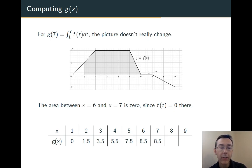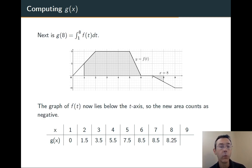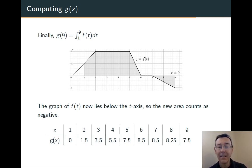When we do g(8), going from 7 to 8, now we're adding in some area below the horizontal axis. So it's actually going to have a negative contribution. We have a triangle of width 1 and height 1.5. So overall, the area is going to be 0.75. Here it's negative, so we subtract 0.75. Finally, going from 8 to 9, we lose another three-quarters of a unit of area.